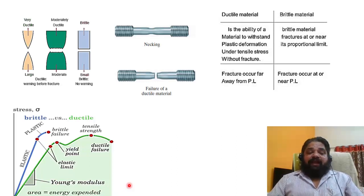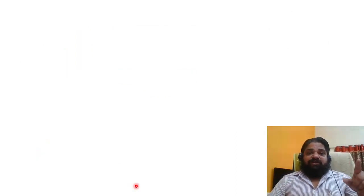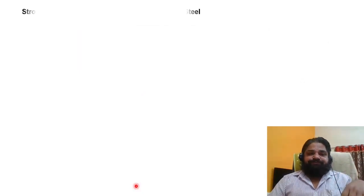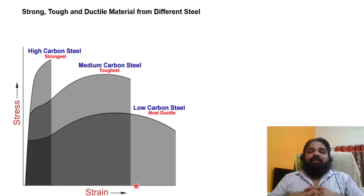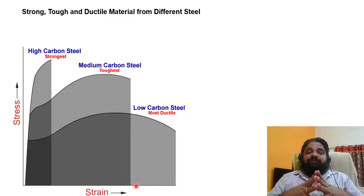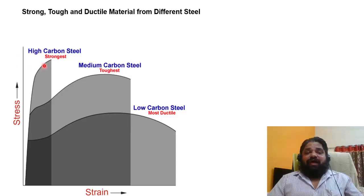The total shaded area under the stress-strain curve is the energy absorbed by the material. Ductile material has the capability to absorb a high amount of energy. People also ask about strong, hard, and tough material. I have shown strong material, tough material, and ductile material — you can see the difference based on the amplitude of the curve.